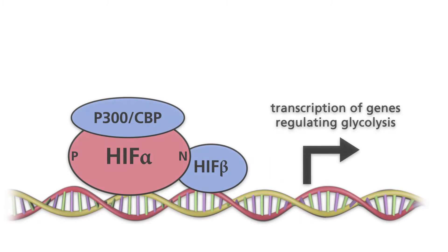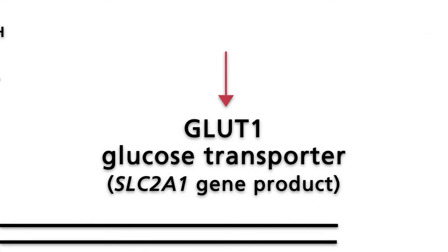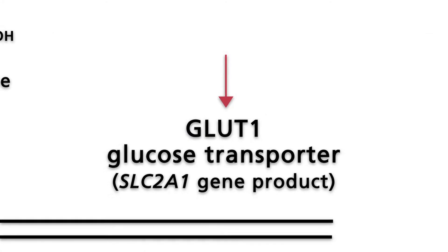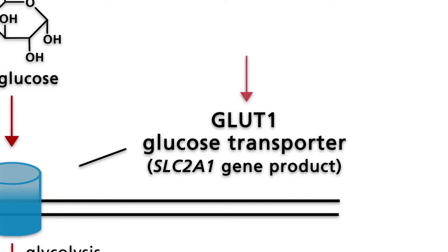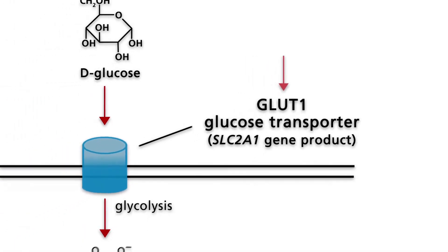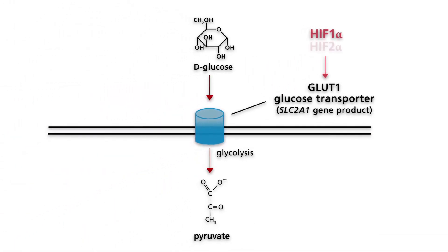A number of HIF-alpha target genes affect glucose metabolism. The SCLC2A1 gene, which encodes a type 1 glucose transporter, responds to both HIF-1-alpha and HIF-2-alpha. In addition, HIF-1-alpha stimulates the production of enzymes involved in glycolysis.